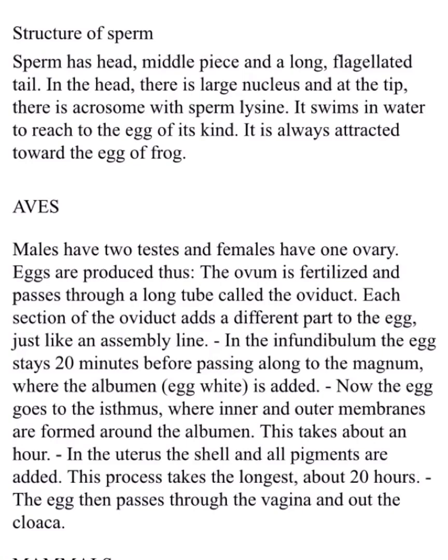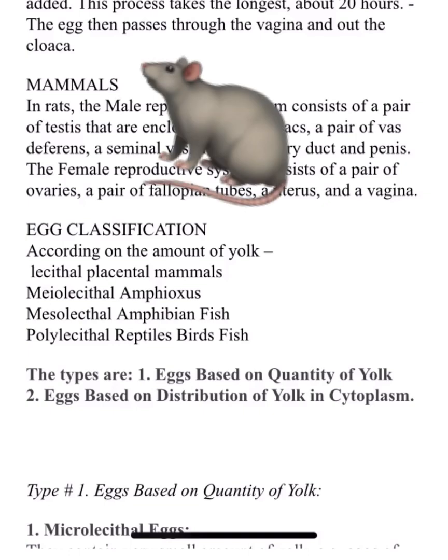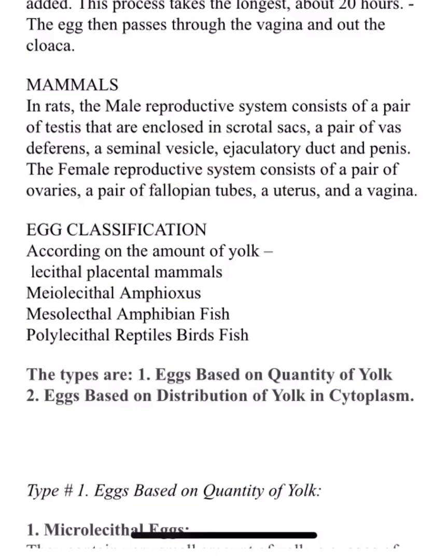Now the aves part — the distinguishing feature here is that males have two testes whereas females have only one ovary. These topics are a little confusing, but you're just supposed to write the distinguishing features. Similarly for mammals, the male reproductive system consists of a pair of testes enclosed in scrotal sacs, whereas the female has a pair of ovaries, a pair of fallopian tubes, a uterus, and a vagina.